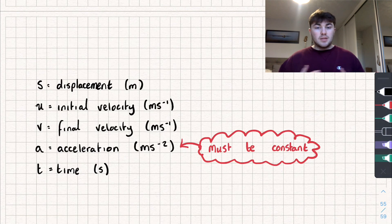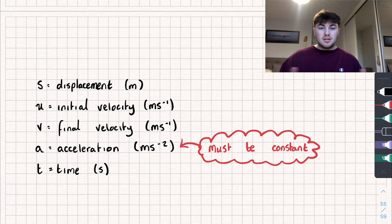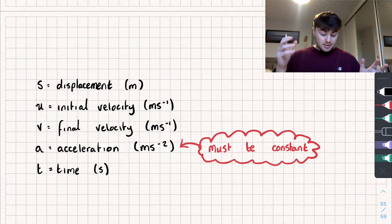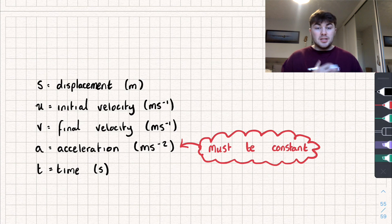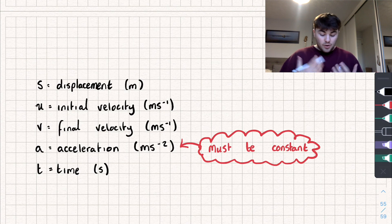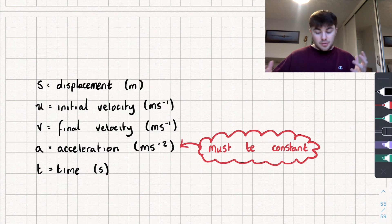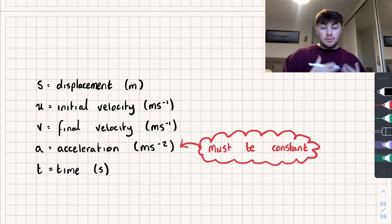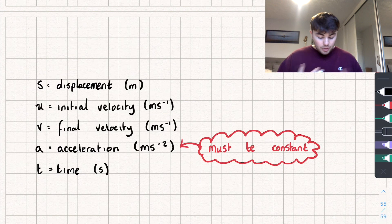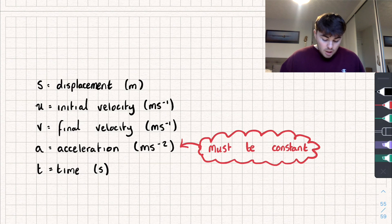V is final velocity, also in meters per second — the speed you're traveling at the end. A question might say you started cycling at four meters per second and at a certain point you were traveling ten meters per second — those would be start and final velocity. Acceleration is measured in meters per second squared, also a vector quantity with both size and direction, and it must be constant for these equations to work. Finally, time is measured in seconds and is a scalar — it doesn't have a direction.